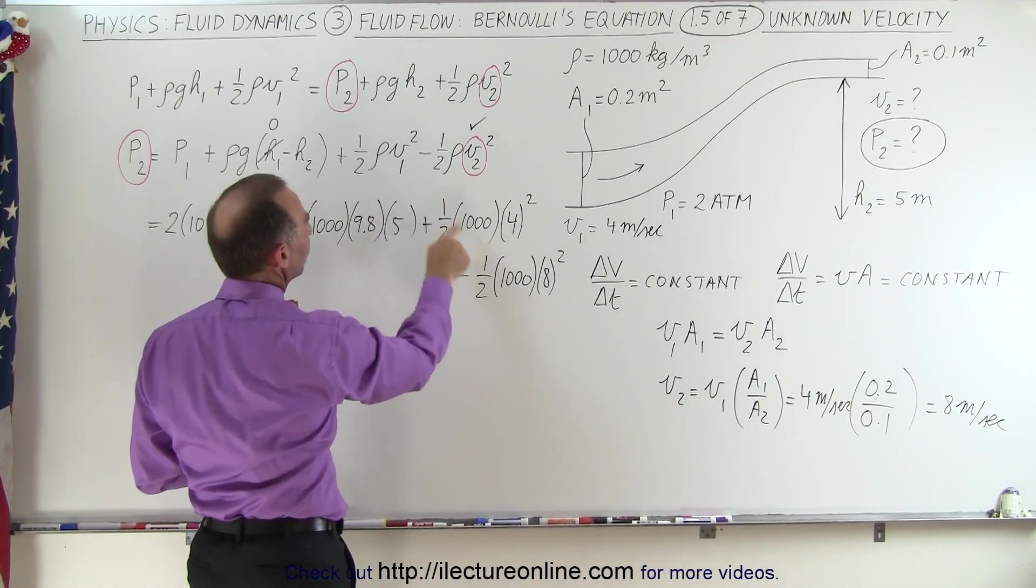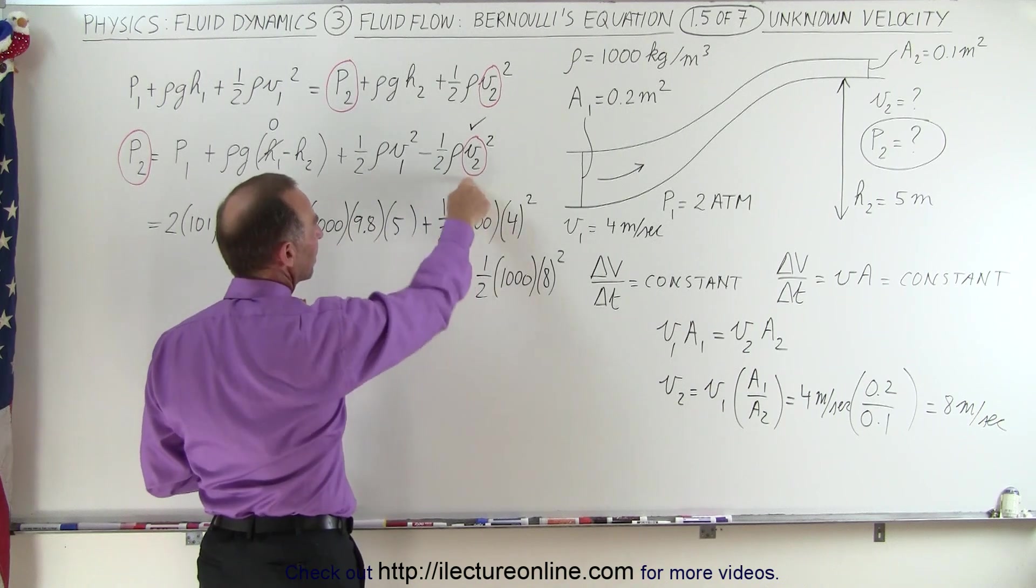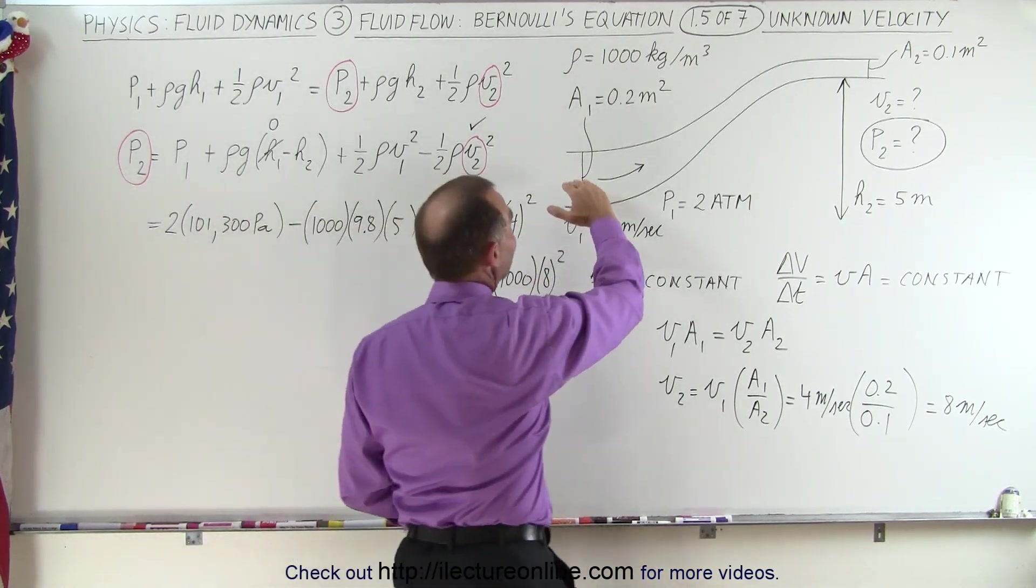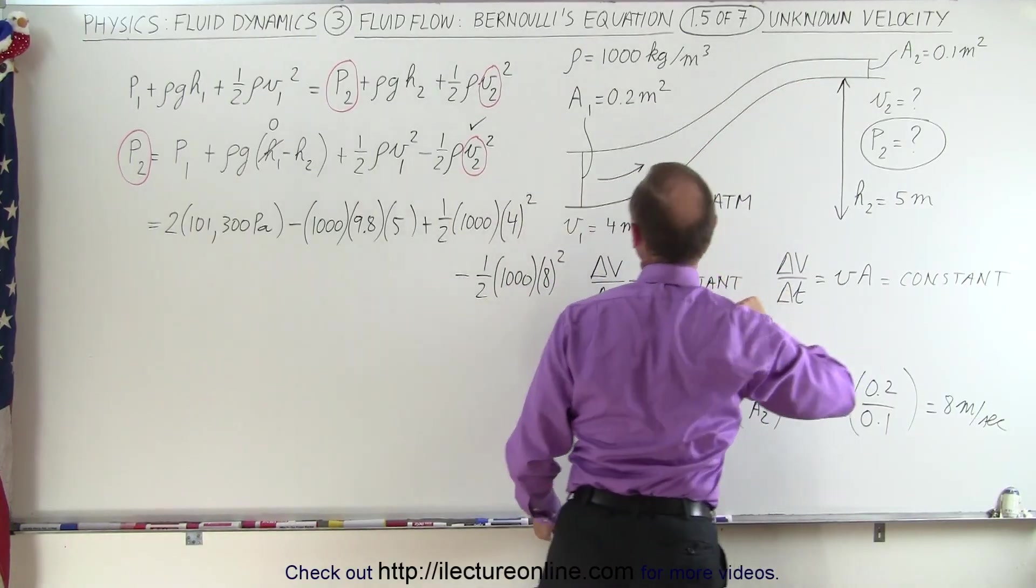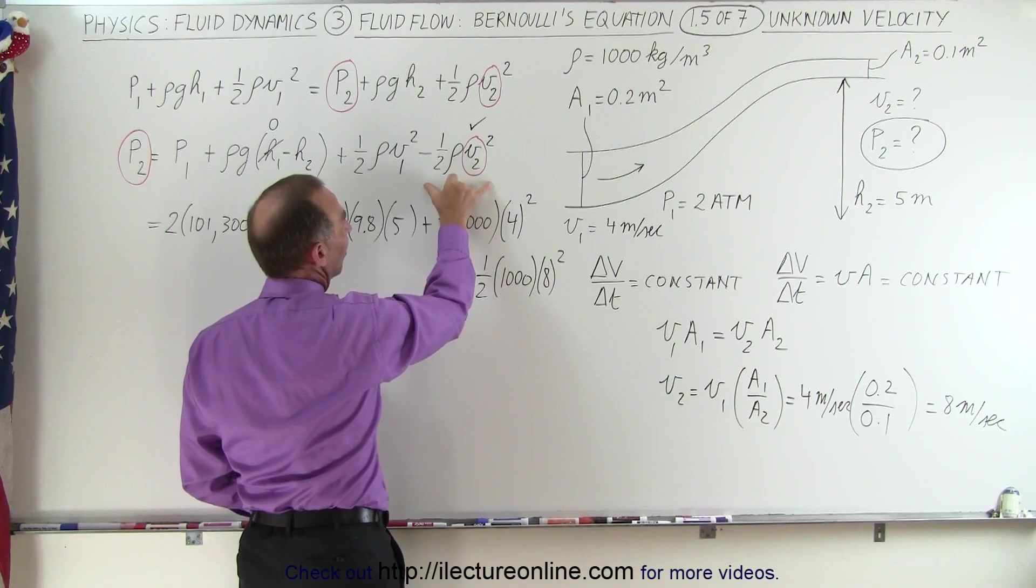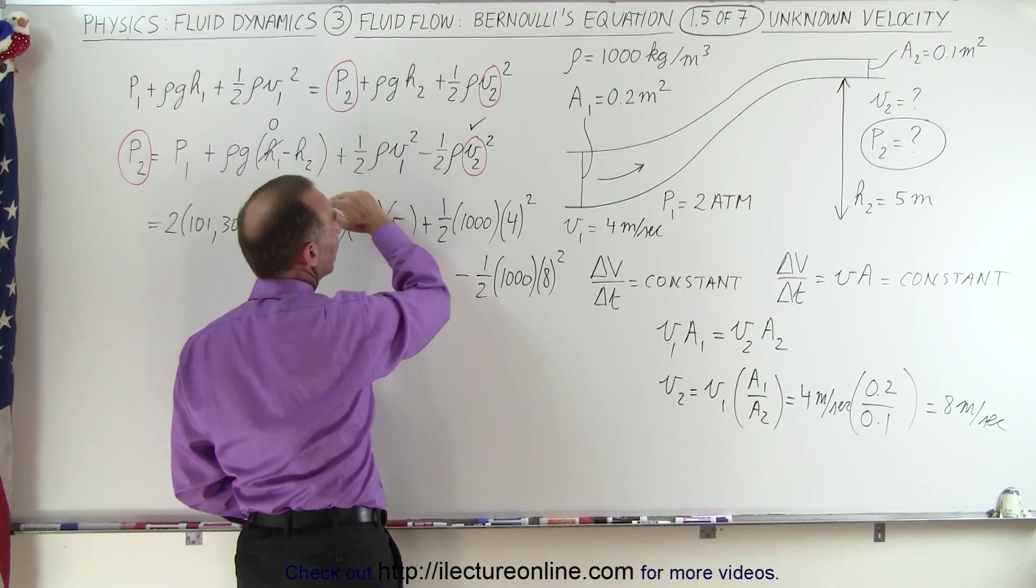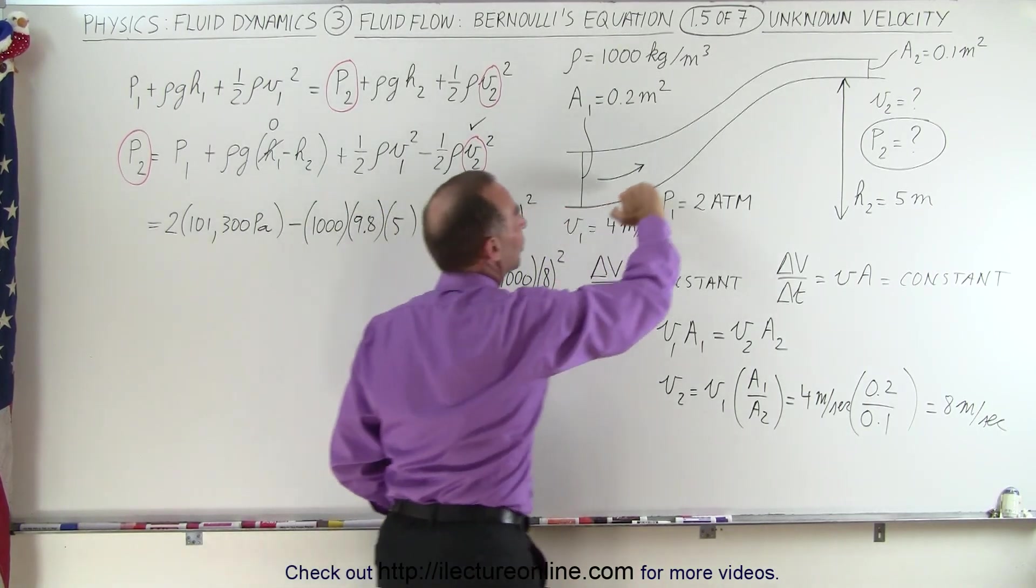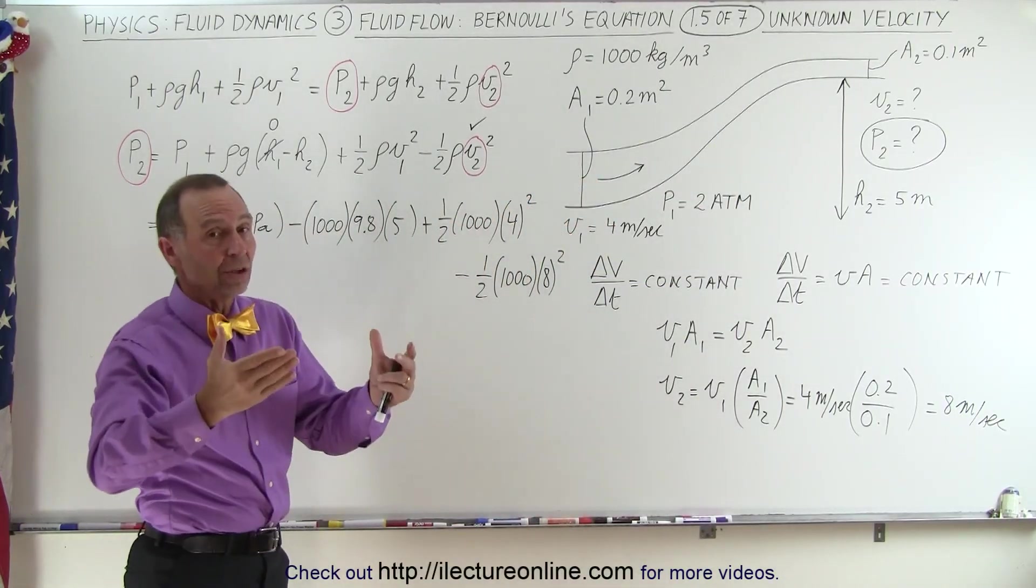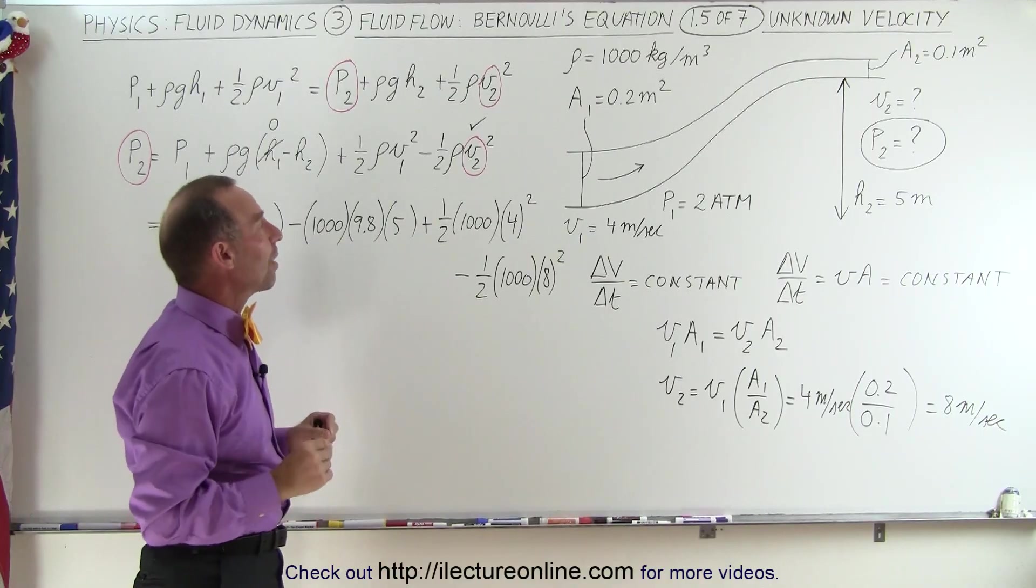Notice that this term here is positive and this term here will be negative. What that means is if the velocity increases as we go down the pipe, if V2 is bigger than V1, and this is a negative quantity, is a positive quantity, that means the pressure will drop as the velocity increases, and that's what we find in a fluid: as the velocity increases the pressure indeed does drop.